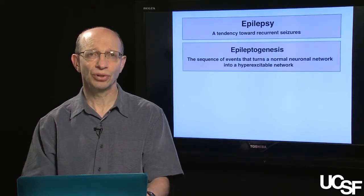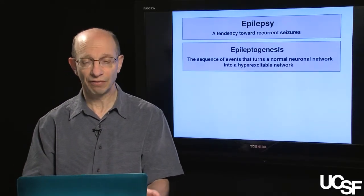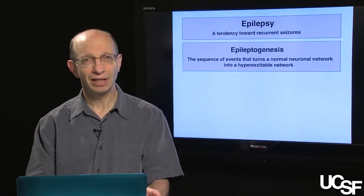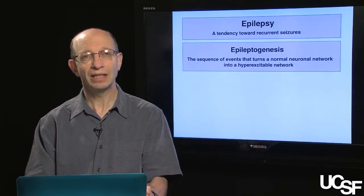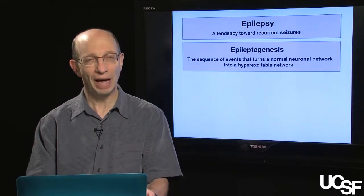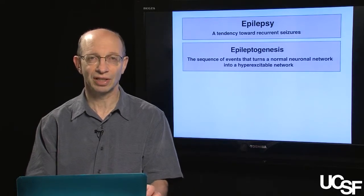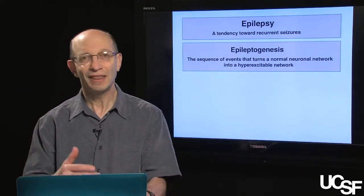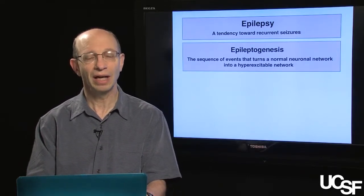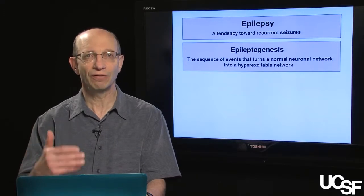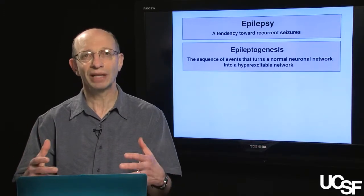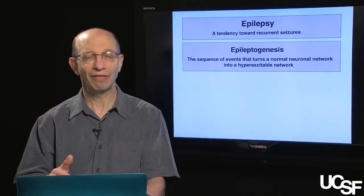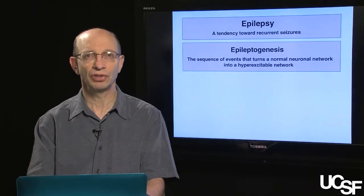Now let's turn to definitions again. We'll start with epilepsy. Epilepsy is a term that refers to a condition in which a patient has a tendency towards recurrent seizures. If an individual has a single seizure, that doesn't make the diagnosis of epilepsy. Epilepsy is when a person has a tendency for recurrent seizures. There's something that's been altered in the person's brain that leads it to have a proclivity towards a recurrence of seizure events.